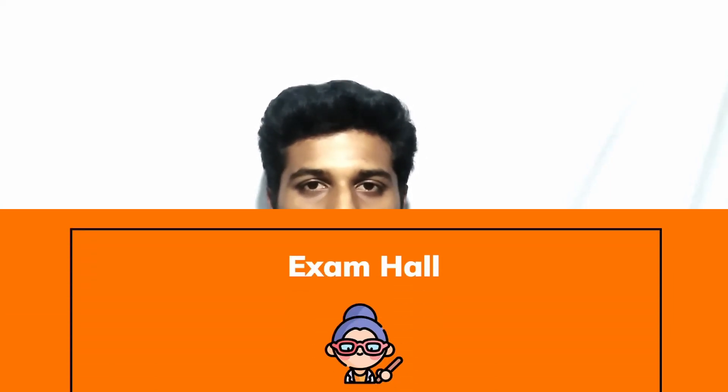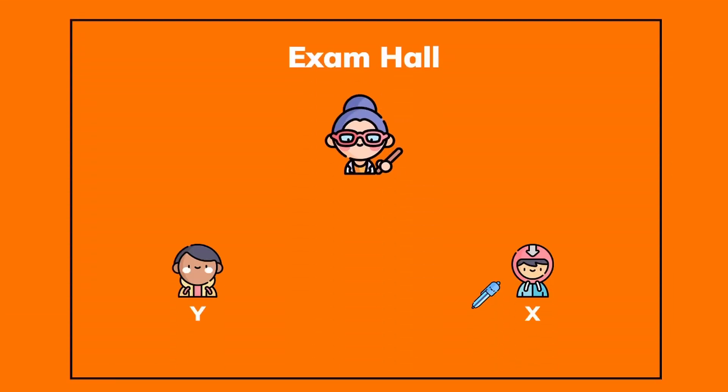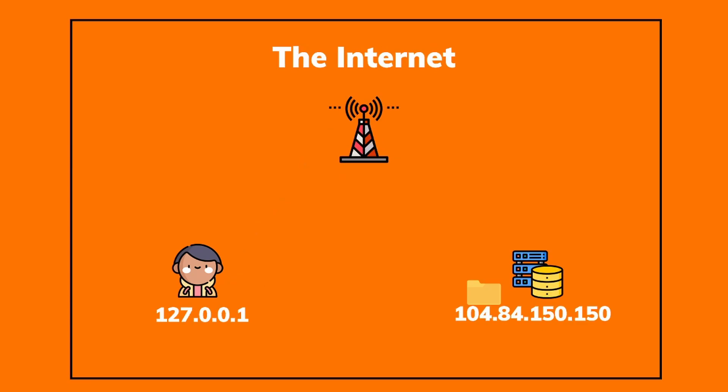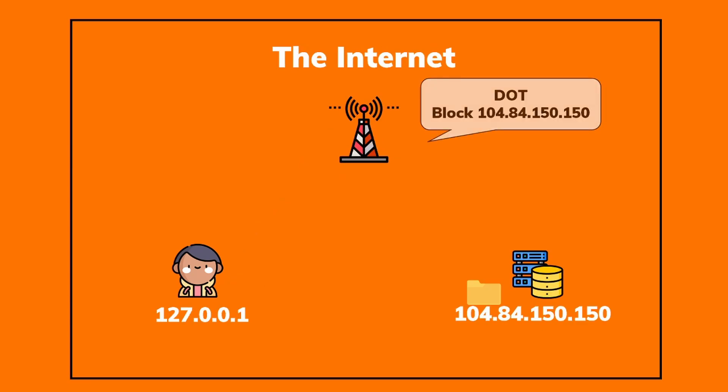Probably many of you have guessed what the government should do to block the app. If the teacher says no when I request a pen from my friend, I'm done. Yes, that's what's happening here. The government issues an order to the Department of Telecommunication to block certain IP addresses of the apps from receiving data in the ISP.